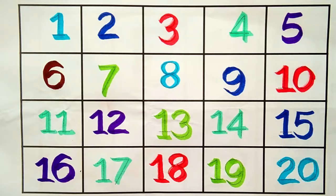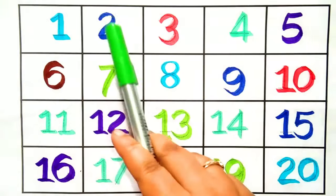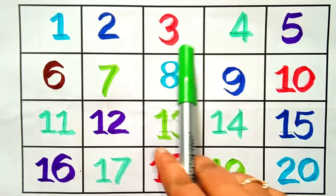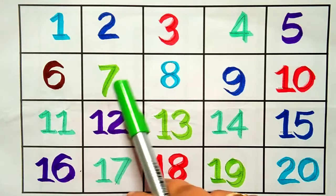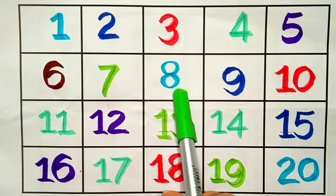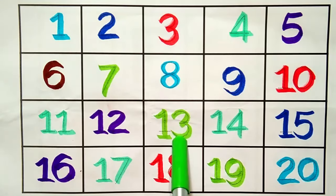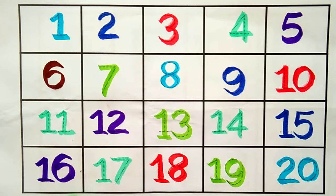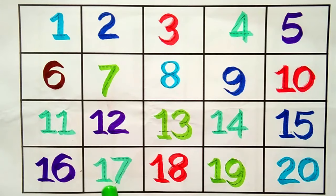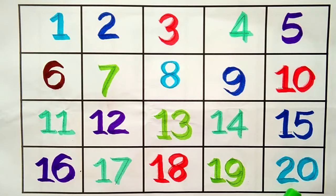Kis Kis Feet Seh Ham Repeat Karthe Hai. One, Two, Three, Four, Five, Six, Seven, Eight, Nine, Ten, Eleven, Twelve, Thirteen, Fourteen, Fifteen, Sixteen, Seventeen, Eighteen, Nineteen, Twenty.